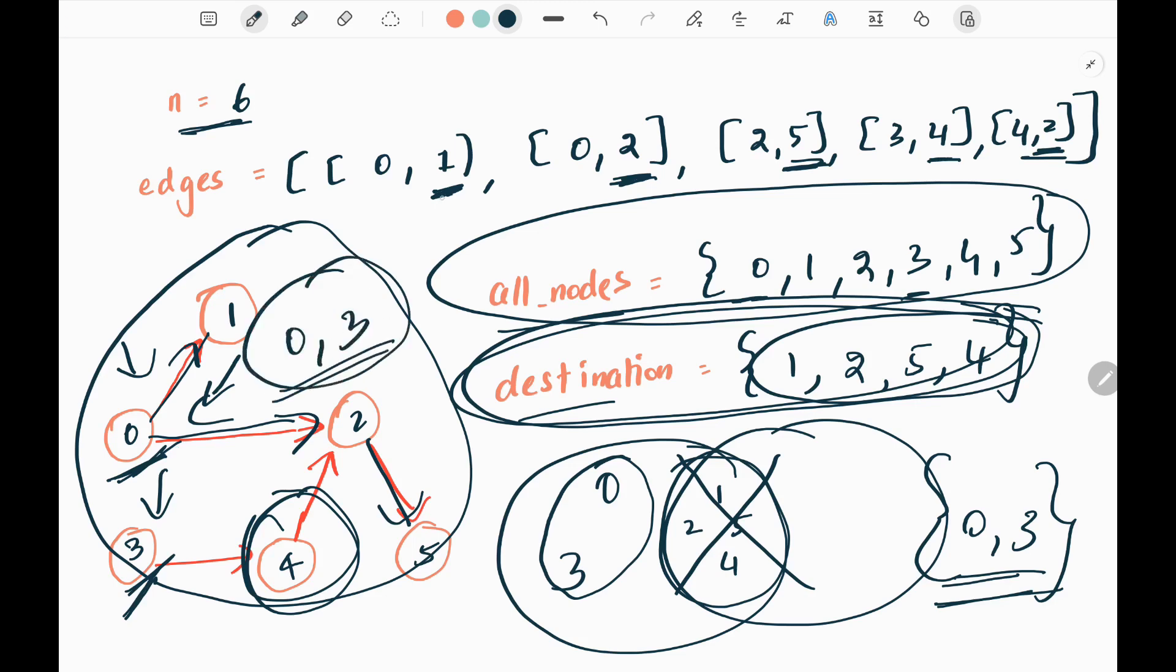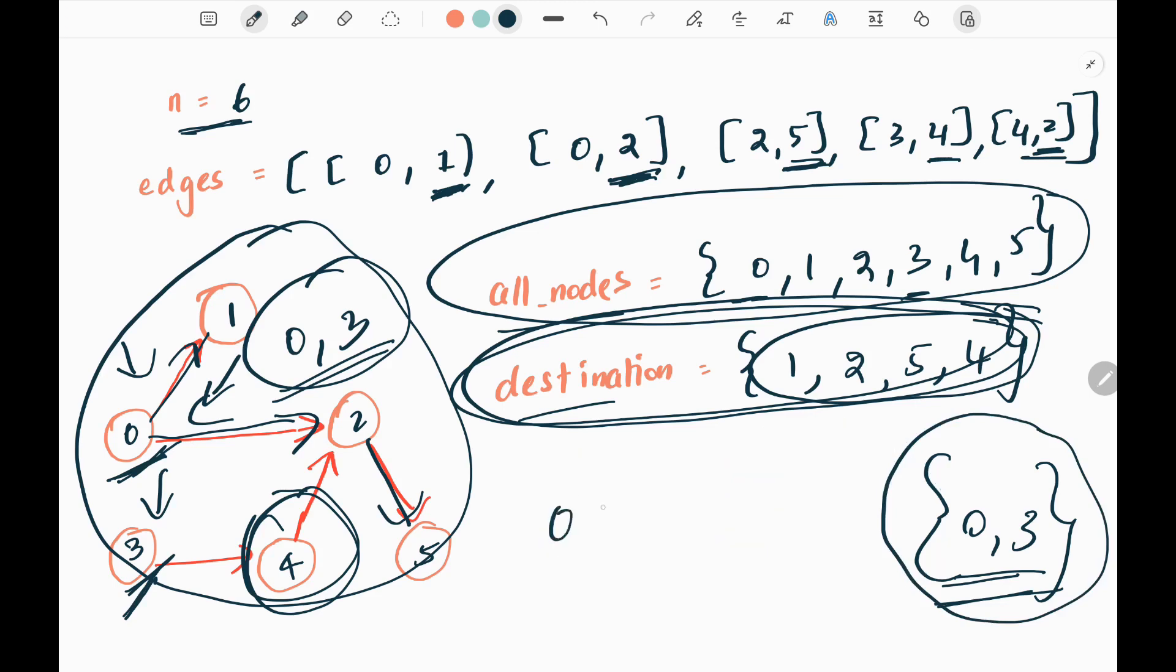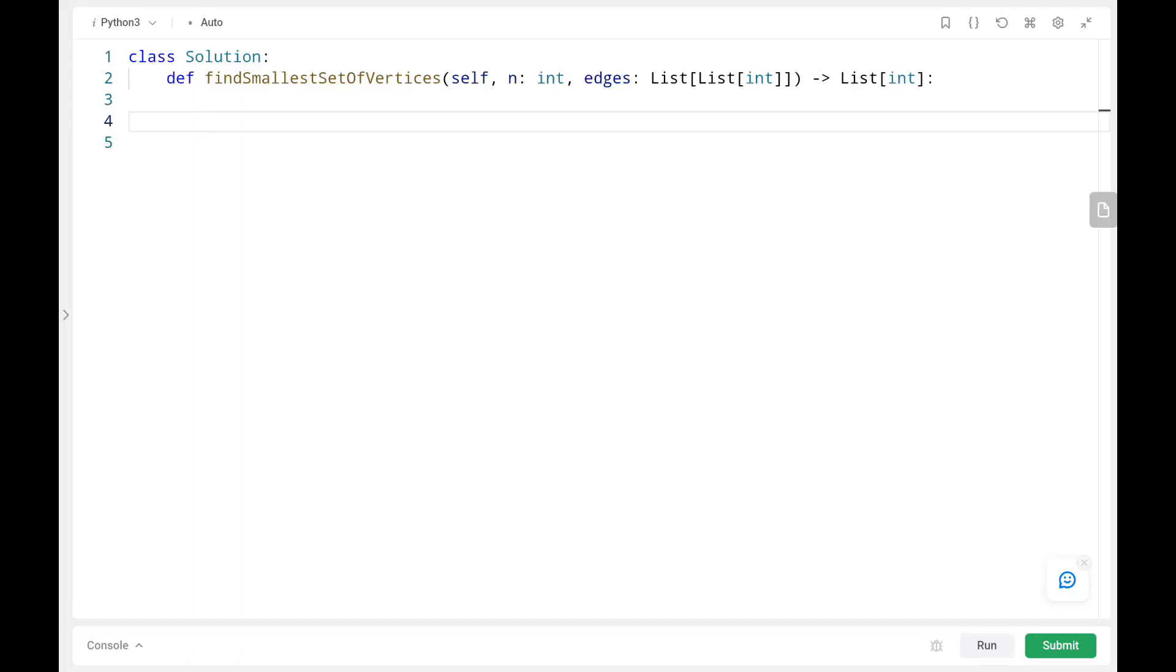That is the reason why we are getting that as my answer in the set difference. The time complexity and space complexity will be order of n plus e. N is number of nodes and e is edges. That's all the logic is. Now we will see the code.